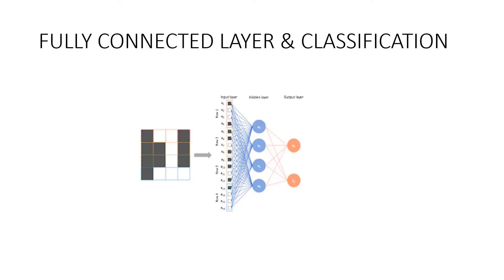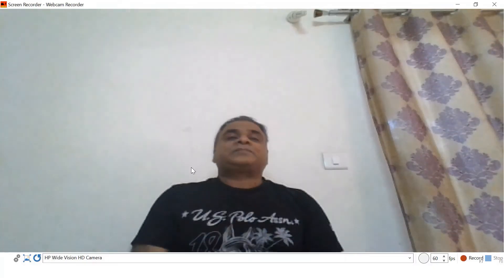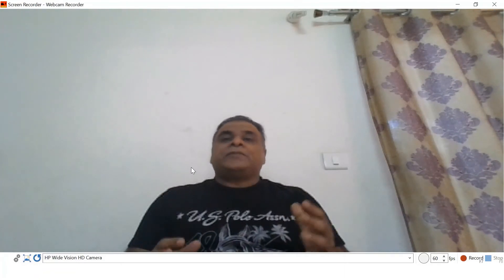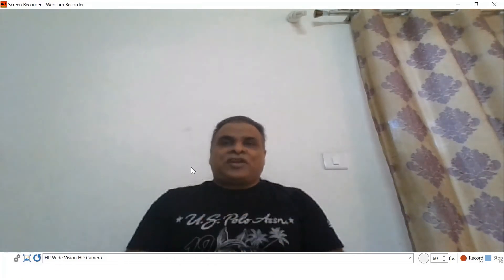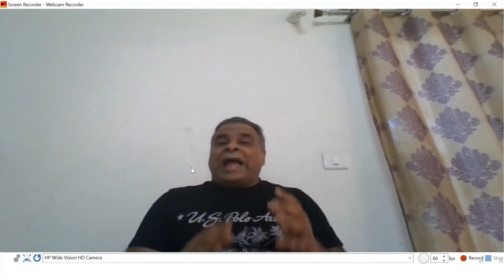Next, let us discuss how classification happens in the fully connected layer. In a fully connected feed-forward network there is an input layer, hidden layer, and output layer. The actual classification happens in this network. When you analyze the flattened vector, certain values are high for a particular input, meaning the flattened vector is unique for a particular input image. To perform real classification, the model must be trained using the back-propagation algorithm.